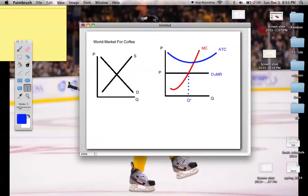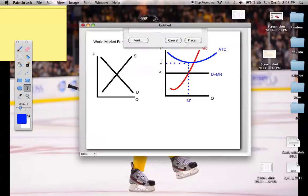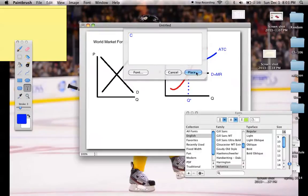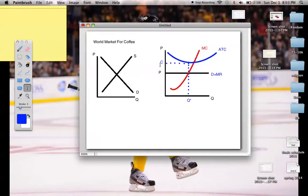And then we also carry this line up to the ATC, and then over, which would mean the new price. And then we label that C, which is the cost, right there.